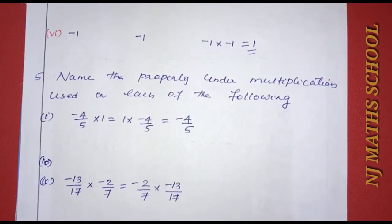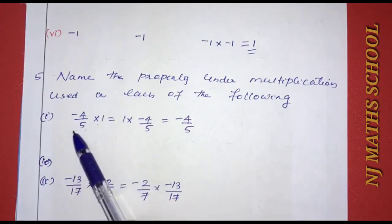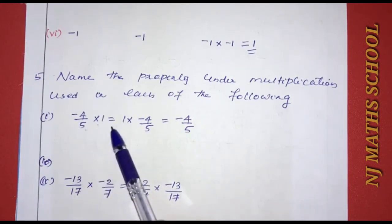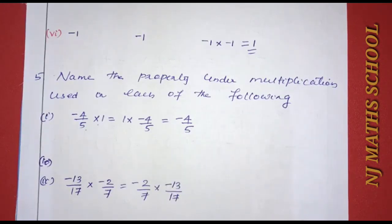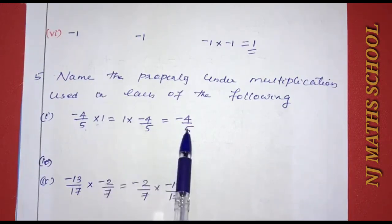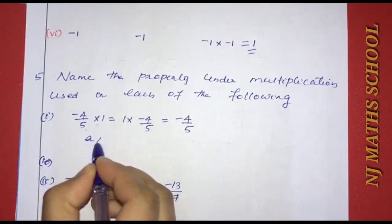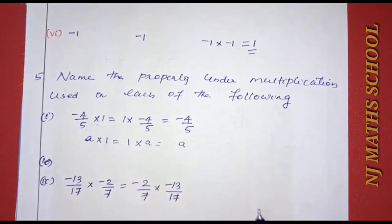Next question: name the property under multiplication used in each of the following. First: negative 4 by 5 into 1 equals 1 into negative 4 by 5 equals negative 4 by 5. When we multiply any number by 1, we get the same number. The property used is multiplicative identity, where 1 is the multiplicative identity.